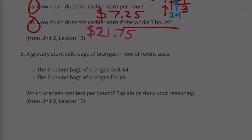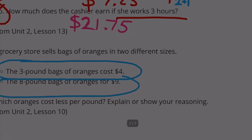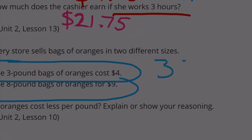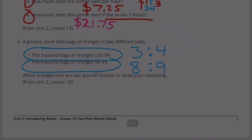A grocery store sells bags of oranges in 2 different sizes. 3 pound bags cost $4. 8 pound bags cost $9. Which oranges cost less per pound? Explain or show your reasoning.